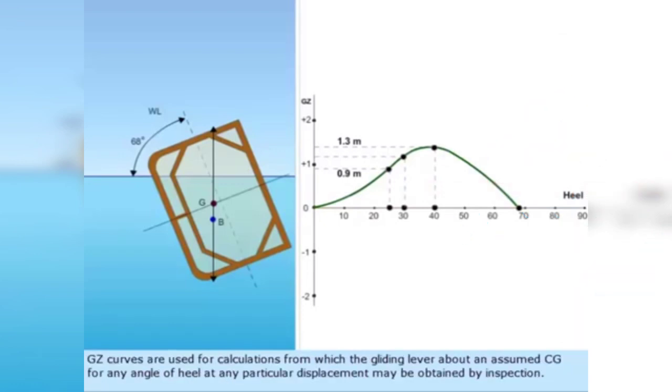GZ curves are used for calculations from which the gliding lever about an assumed CG for any angle of heel at any particular displacement may be obtained by inspection.